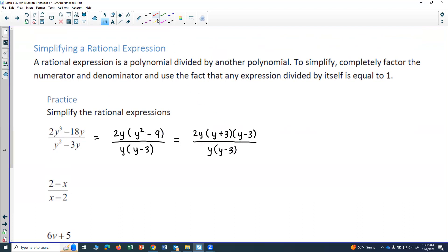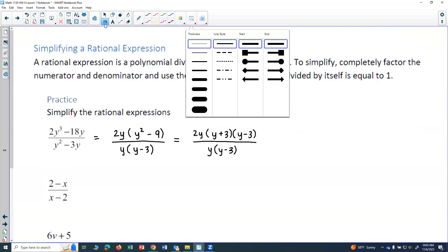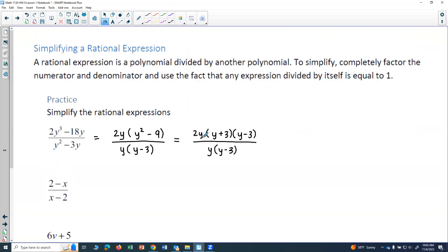So now I want to look at what might cancel. So what I'm going to do is I'm going to look for common factors in the numerator and denominator. So y is in the numerator and in the denominator, so those cancel and just leave me with a 1. Remember, any expression divided by itself is equal to 1. And then I have y minus 3 over y minus 3. Those cancel and just leave me with a 1.